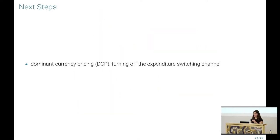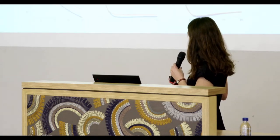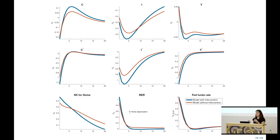A few next steps: I want to include dominant currency pricing, have exports be sticky in U.S. dollars to turn off the expenditure switching channel and see how the model changes. The main direction is coming from the behavior of net exports. When we take into account changes in net exports due to dominant currency pricing, some of the responses of the real exchange rate might be more amplified and the benefit for sterilized intervention might be stronger. Thank you.